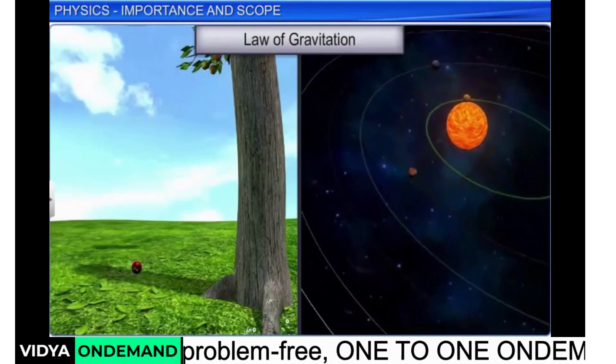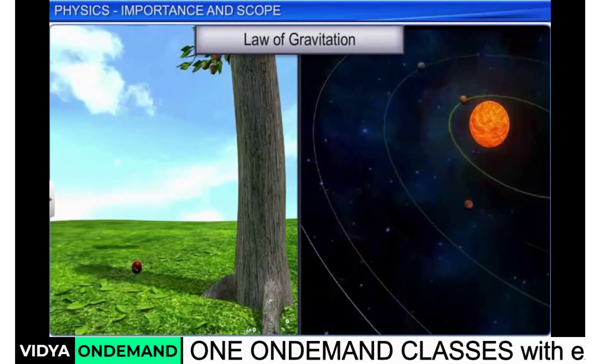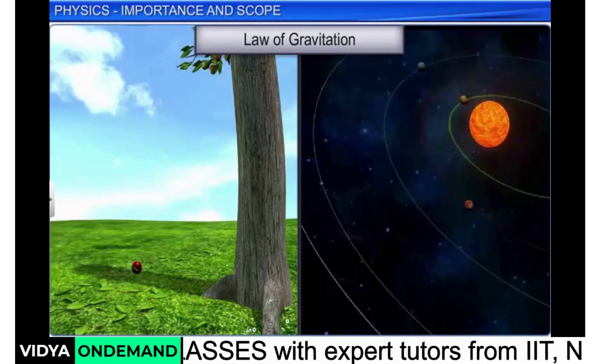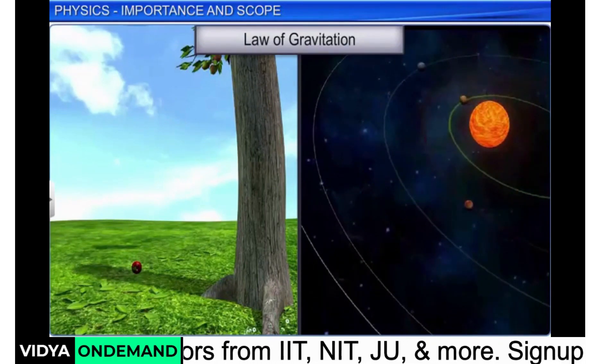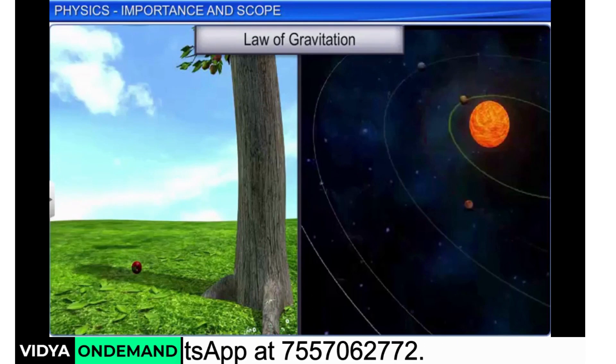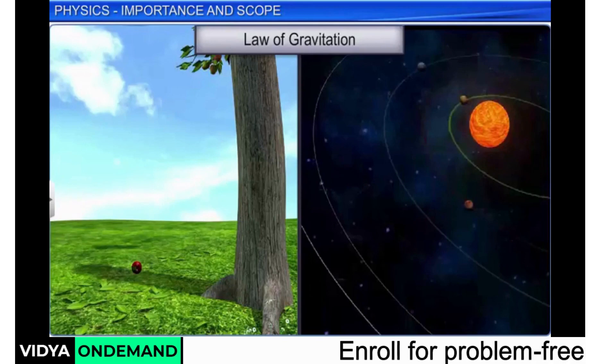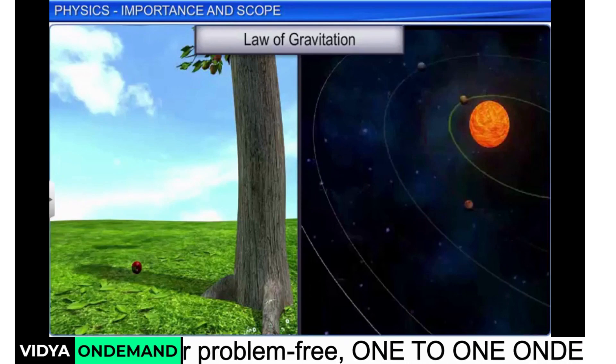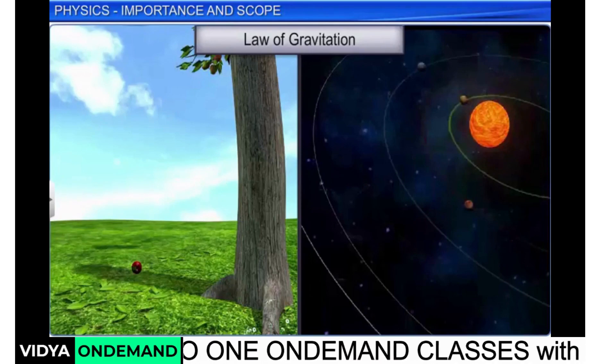Thus, we derive the properties of bigger or more complex systems from the properties or interaction of the simpler parts, or constituents of the system. This approach is called reductionism and helps in understanding the properties of complex systems in physics like functioning of satellites.